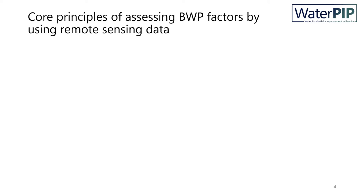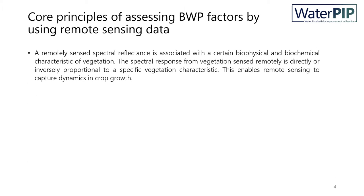How can we use remote sensing data to assess biophysical water productivity factors? First of all, I will talk about its core principles. Remotely sensed spectral reflectance is associated with specific biophysical and biochemical vegetation characteristics. The spectral response is directly or indirectly proportional to the vegetation characteristic. Thus, we can capture dynamics in crop growth using this relationship between spectral response and vegetation characteristic.